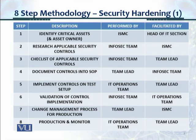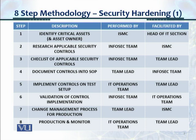This table shows the steps, who performs them, and who facilitates. Step one — identify critical assets: performed by ISMC, facilitated by the head of the IT section. Step two — research applicable security controls: done by the information security team, monitored by ISMC. Step three — checklist of applicable controls: developed by the information security team, with the team lead helping. Step four — document controls into SOP: the team lead gets this done, with information security team support. Step five — implement controls on test setup: the IT operations team executes, with the team lead helping. Step six — validation: information security team does it, with IT operations team support. Step seven — change management: handled by the team lead, with ISMC support. Step eight — production and monitor: done by IT operations team, helped by the team lead.